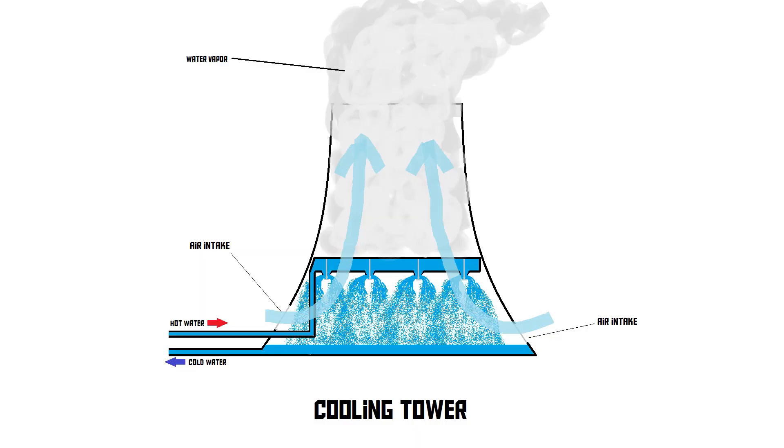The bigger cooling towers with the hyperbolic shape are so-called natural draft towers. In those towers there is also an airflow from bottom to top, but it's a natural airflow caused by the pressure difference inside and outside the tower — no fans are used. Now you know exactly what's going on inside one of those big concrete towers the next time you drive past a power station.